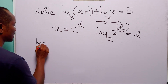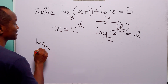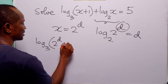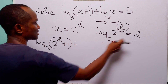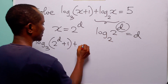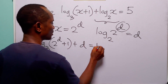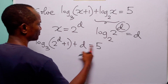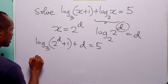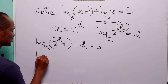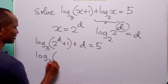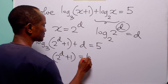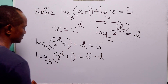We have log to base 3 of 2 to the power d plus 1, plus d, is equal to 5. Now, let us subtract d from both sides of this equation. The equation becomes log to base 3 of 2 to the power d plus 1 is equal to 5 minus d.